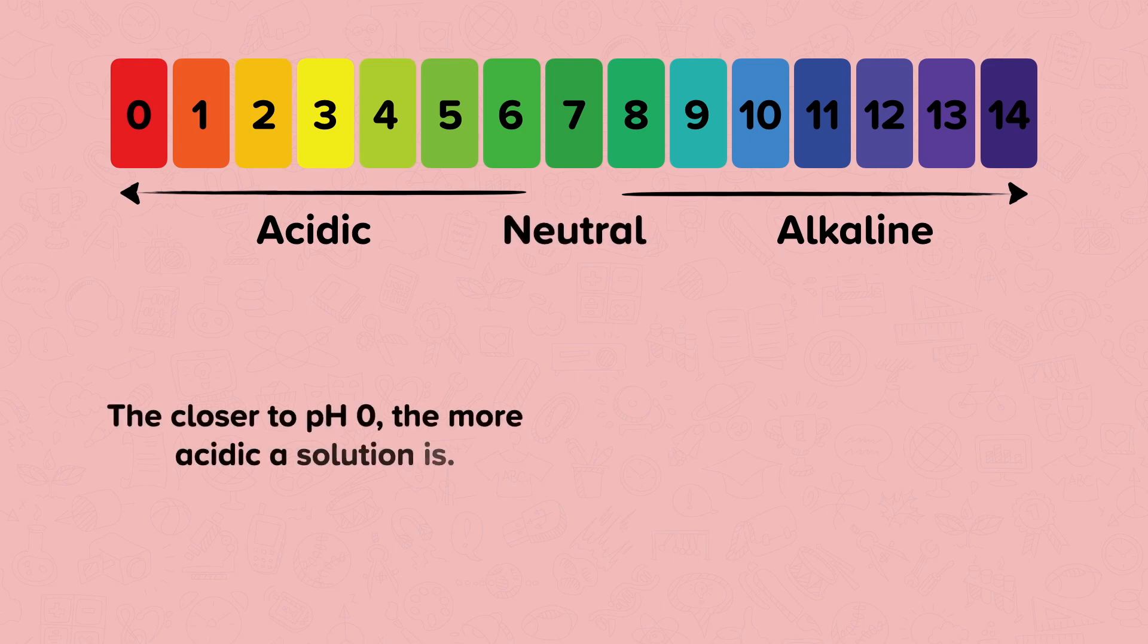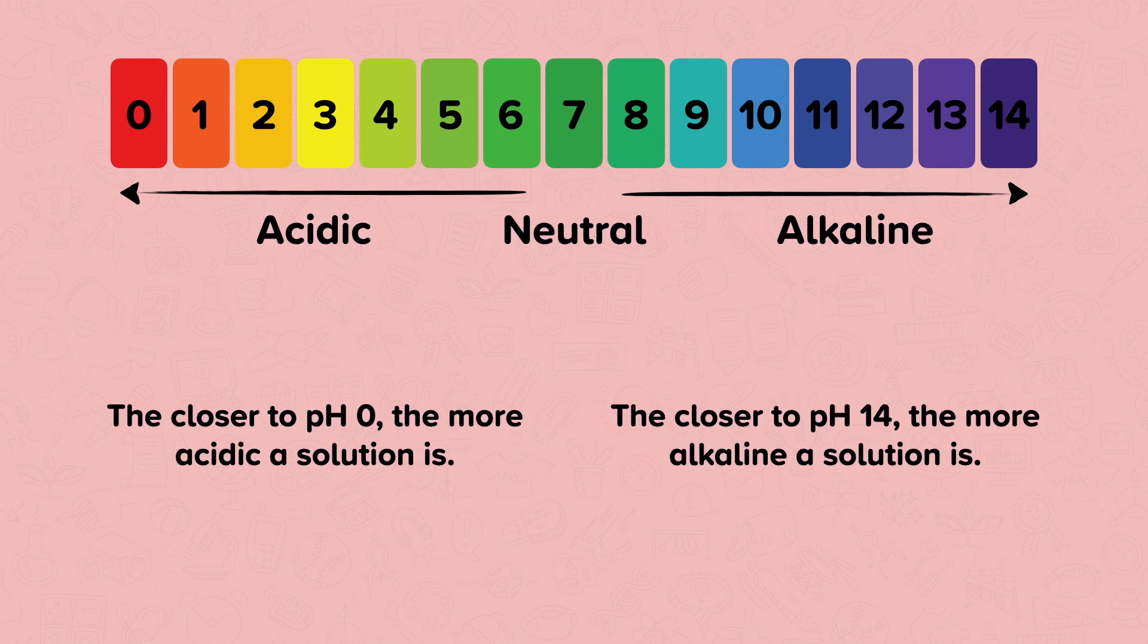The closer to pH 0 the more acidic a solution is. The closer to pH 14 the more alkaline a solution is. Universal indicator is very versatile because it can show us how acidic or alkaline a solution is.